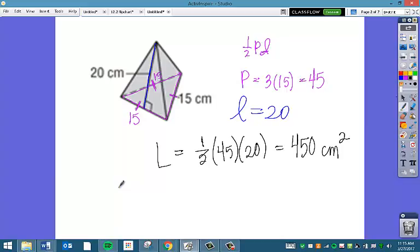So our lateral surface area is going to be one-half times the perimeter of the base times the slant height, which is going to give us 450 centimeters squared. Now for our total surface area, we're going to have to add in the area of the base. That's where this is going to get a little bit tricky.